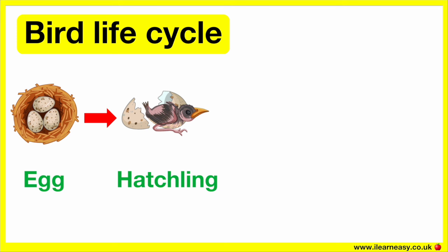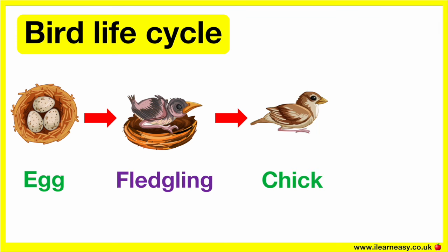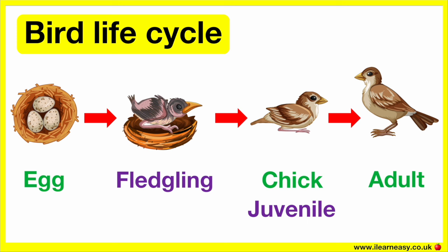The hatchling will stay in its nest, relying on its parents for warmth, protection and food — at this stage it's known as a nestling. The chick is covered in soft down. After a while, the chick will develop features such as flight feathers and wing muscles — at this stage it's known as a fledgling. The chick will begin to explore the outside world and over time become independent as it learns to fly and find food for itself — at this stage it's known as a juvenile. As the chick grows into an adult, its features will change and it will be able to reproduce by laying eggs to repeat this cycle.